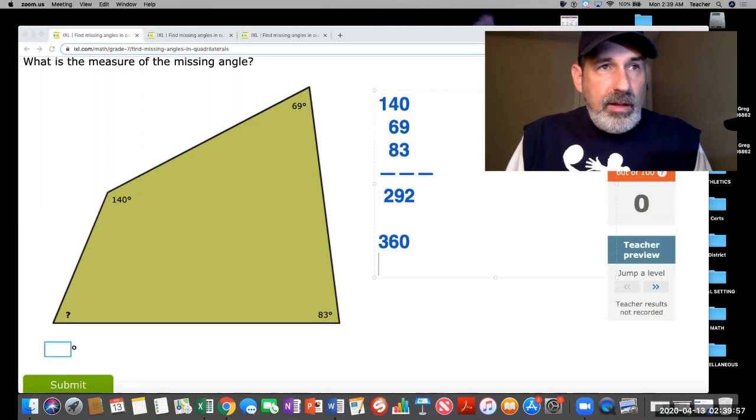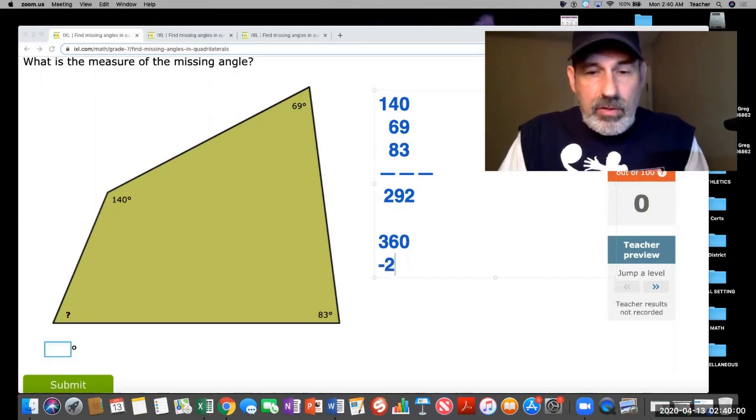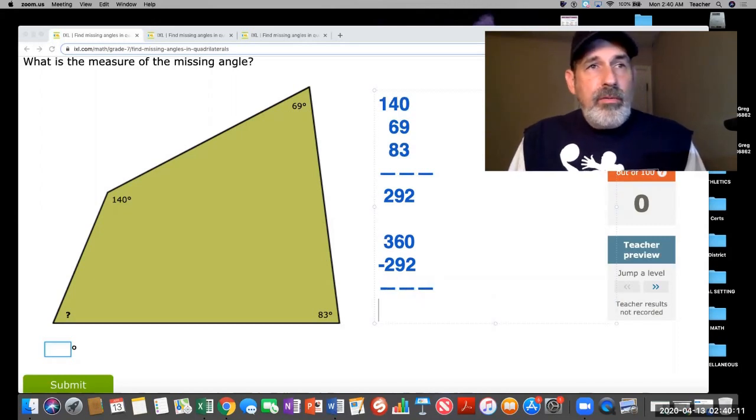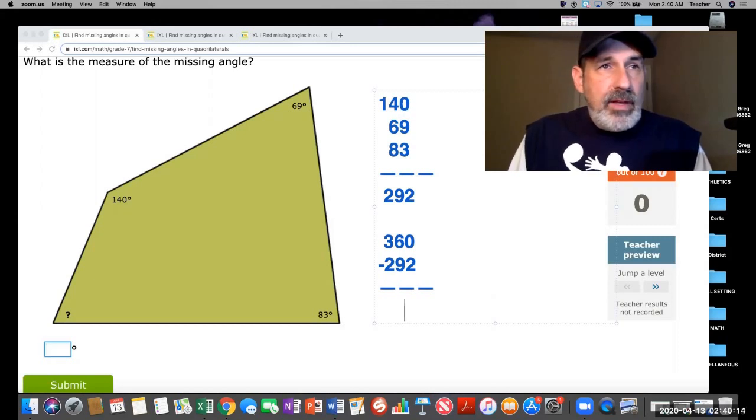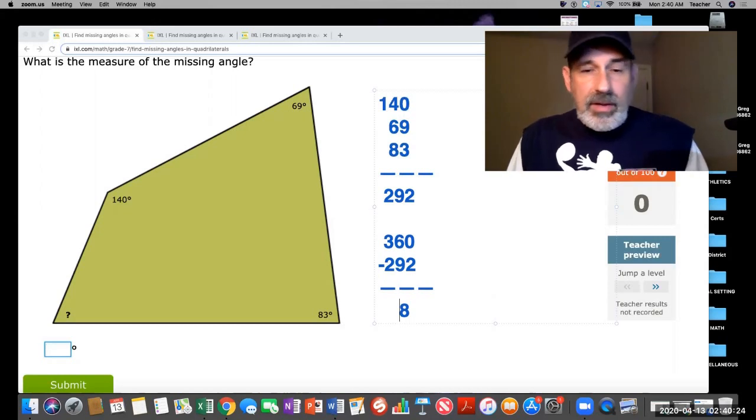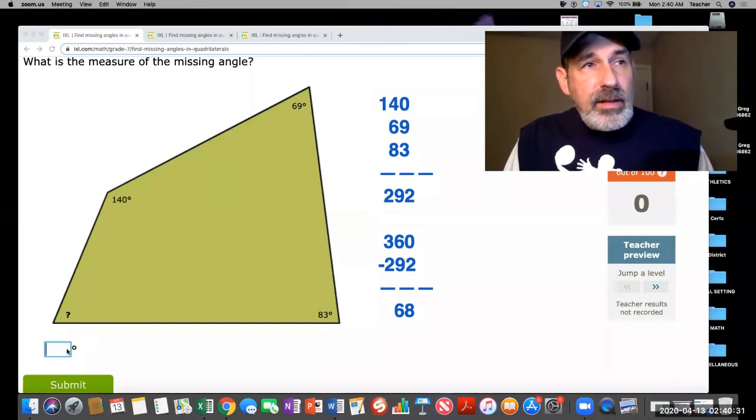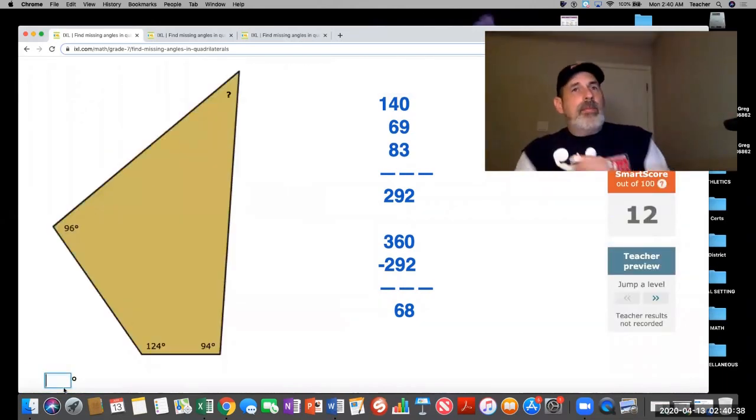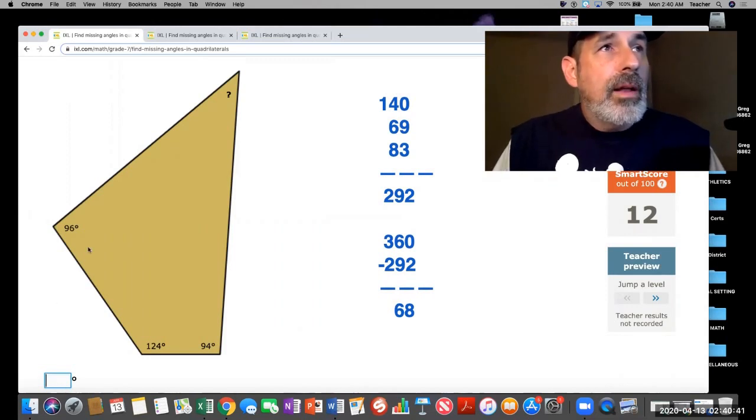Now I have to subtract that from 360 and it'll tell me what my remaining side is. 360 minus 292. I'm going to borrow from the 6, 10 minus 2 is 8. I have a 5 now, 5 cannot subtract 9, so I'm going to borrow from that 3. 15 minus 9 is 6. So that last angle has to be 68 degrees. This is going to be quicker in the future than me handwriting on the screen.